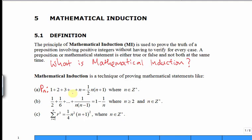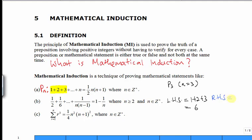Let's verify for the case of P3. P3 means n takes the value of 3, and on the left-hand side of this expression, P3 means the sum of the first three terms. This gives us 1 plus 2 plus 3, which is 6. For the right-hand side, we substitute n equal to 3 into this expression, which gives us 6 as well. So we have verified that when n equals 3, this statement is true.